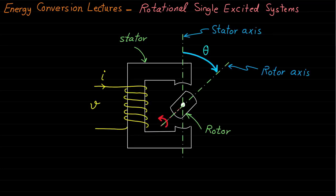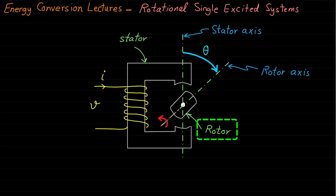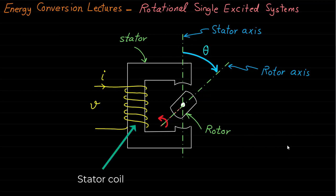This system consists of a fixed part called the stator and a rotating part called the rotor. Both the stator and rotor are made of magnetic materials. Also, the system has one excitation coil called the stator coil or stator winding.